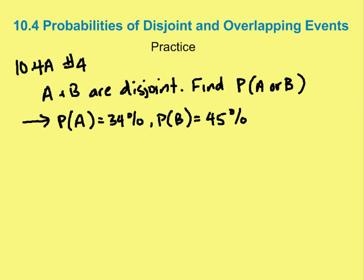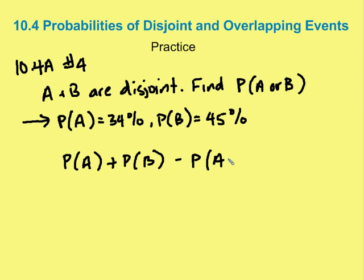We know that A and B are disjoint events, so we want to find the probability of A or B. The formula for the probability of disjoint and overlapping events is: P(A or B) = P(A) + P(B) − P(A and B).